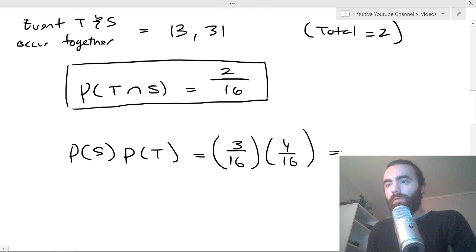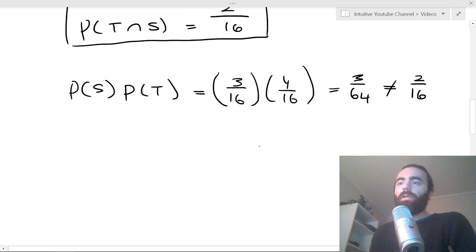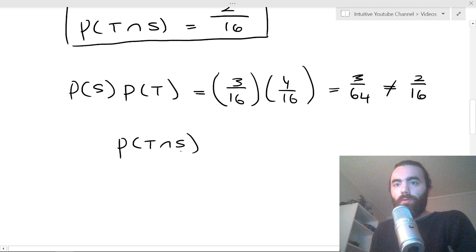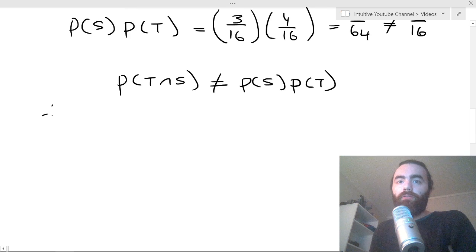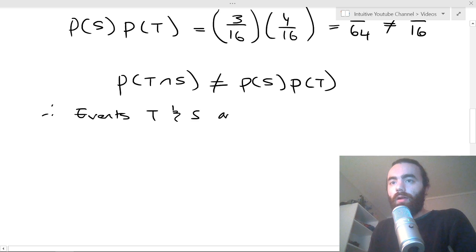And that is clearly 3 over 64, which is not equal to 2 over 16. So therefore, that means that the probability of the both occurring does not equal the probability of S occurring times the probability of T occurring. And therefore, events T and S are not independent.